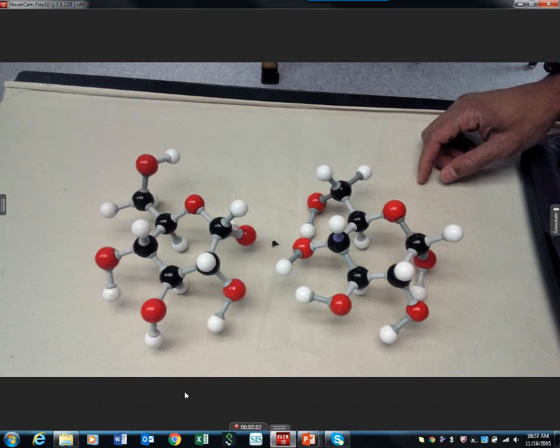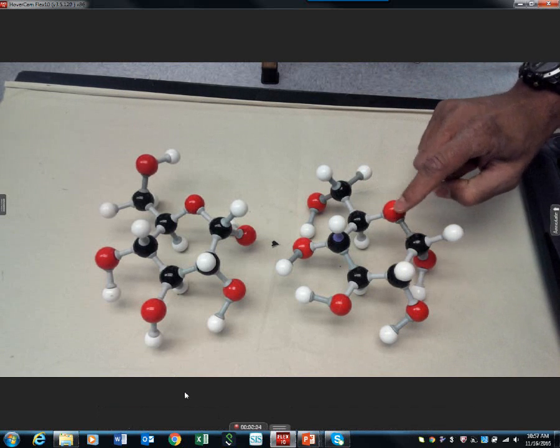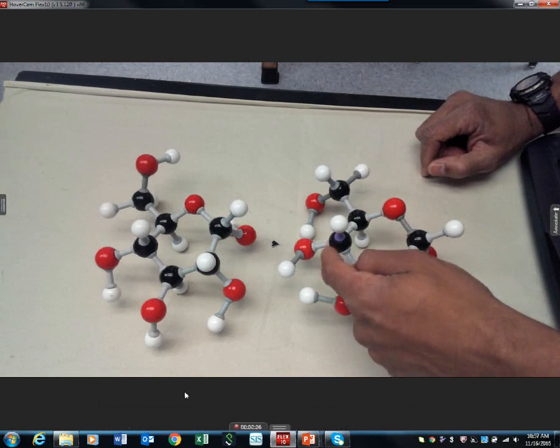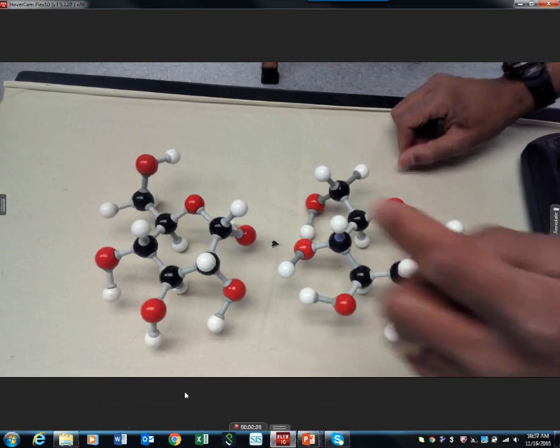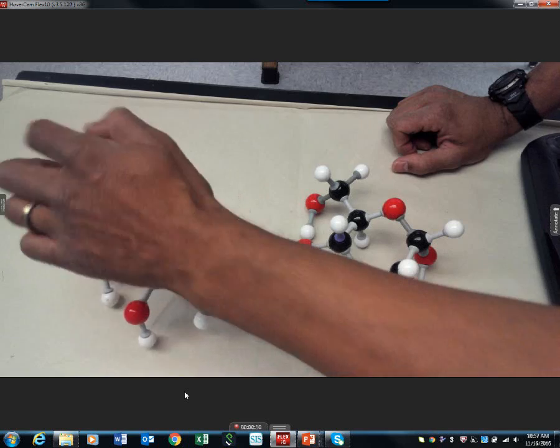So, what do you see? I see 1, 2, 3, 4, 5, 6 carbons. I also see 1, 2, 3, 4, 5, 6 carbons.